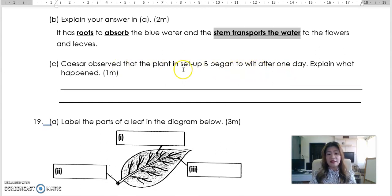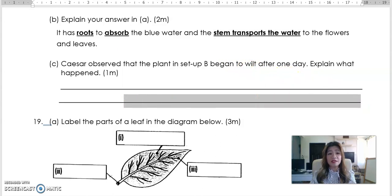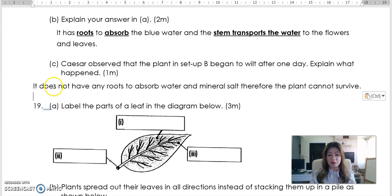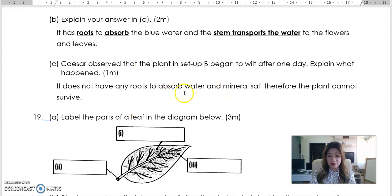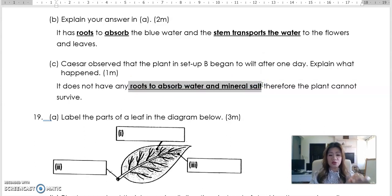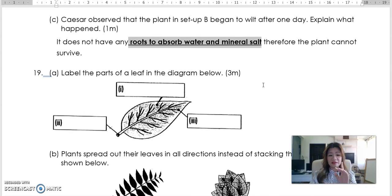Caesar observed that the plant in setup B began to wilt after one day. So you notice setup B did not have roots. So when there's no roots, roots are very important. Because if there's no roots, it cannot absorb water and therefore it will wither. Plants need water as much as humans do. So it does not have any roots to absorb water and mineral salt. Therefore, the plant cannot survive. So you will need to say that it is the roots that cannot absorb water and mineral. So you need to memorize this. Roots absorb water and mineral. It has to be in your answer. That is the keyword.